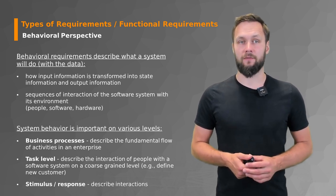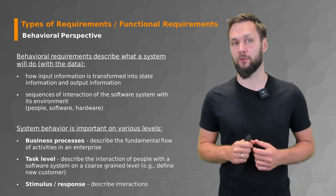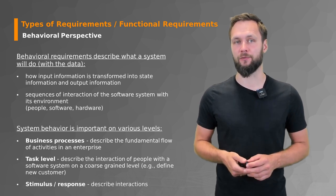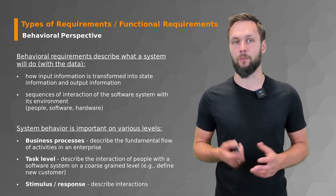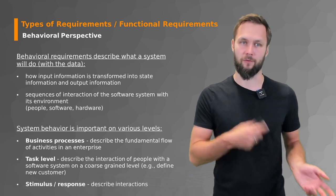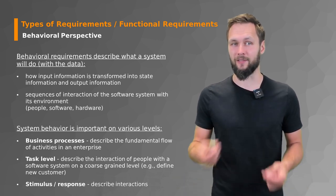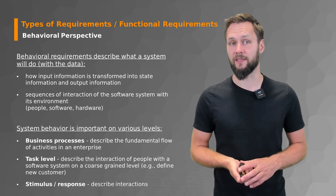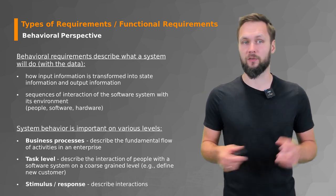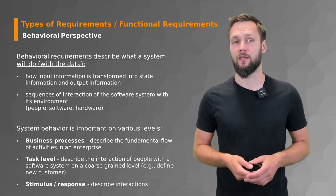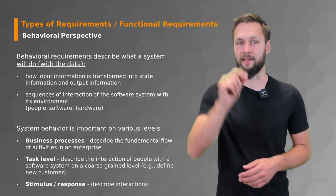The behavioral perspective is used to describe what a system will do with the data from the data perspective — how input information is transformed into state information and output information, and how sequences of interactions of the software system within its environment happen, such as with people, software, or hardware. System behavior is important at various levels: at the business process level it describes fundamental flows of activities in an enterprise; at the task level it describes interactions of people with a software system on a coarse-grained level, such as defining a new customer; and it also describes interactions like stimulus and responses — for example, what happens when I click something.